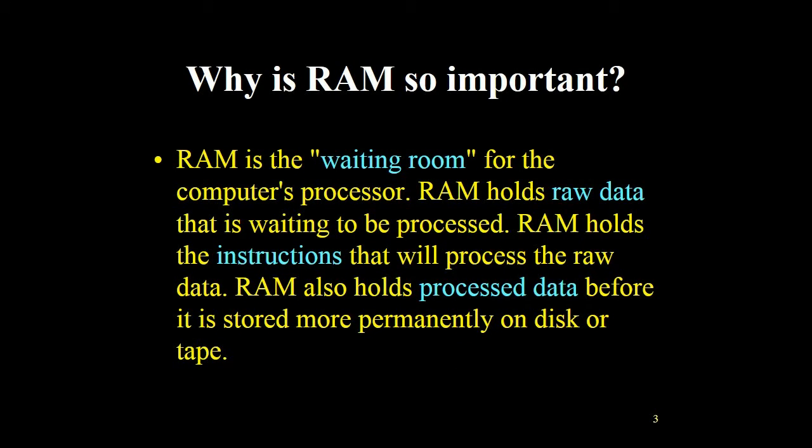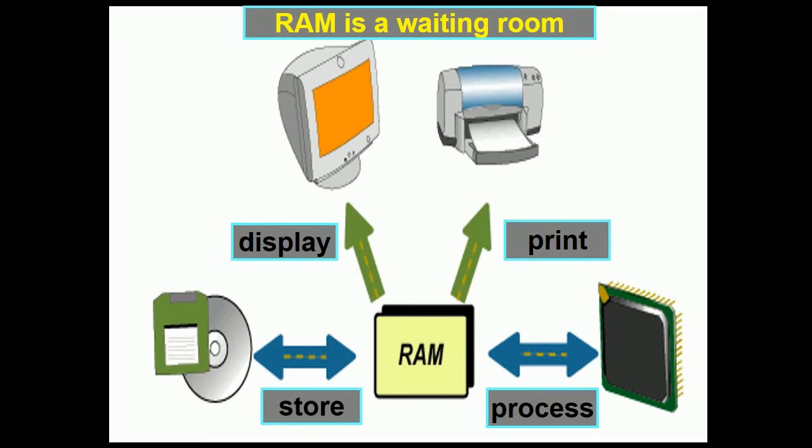Why is RAM so important? RAM is a waiting room for the computer's processor. RAM holds raw data that is waiting to be processed, holds the instructions that will process the raw data, and holds processed data before it is stored more permanently on disk or tape.